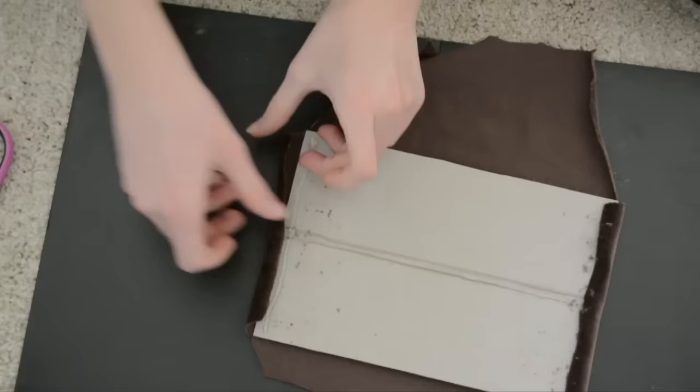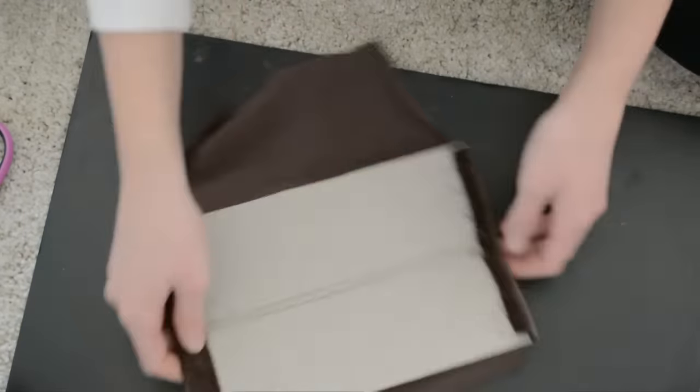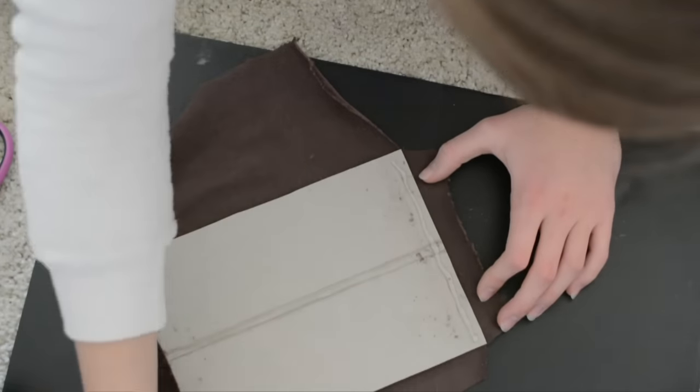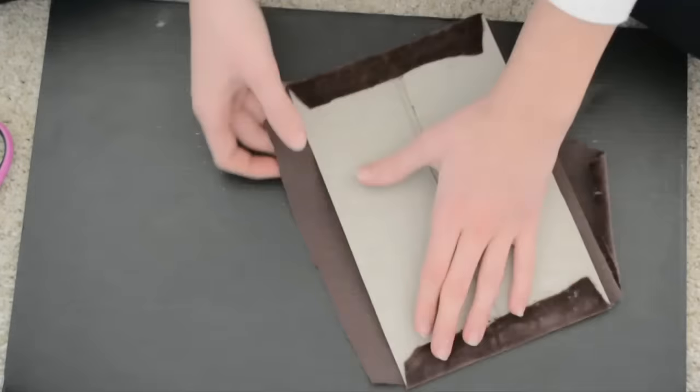As you can see, I'm just taking some hot glue and drawing a line, and then I'm folding over the fabric and kind of stretching it to make sure it is nice and tight and looks kind of professional, I guess. And then you're going to want to do that around all of the edges.